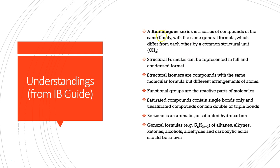The IB expects us to understand what a homologous series is, and we'll define that in our coming videos. We also need to know the general formula for different families of organic compounds and how they differ from each other. We'll look at the structural formulas of organic compounds — this means we are going to be drawing diagrams and we need to follow conventions for doing so, as well as a condensed format.